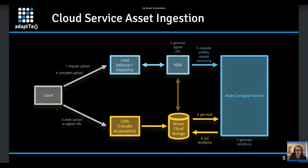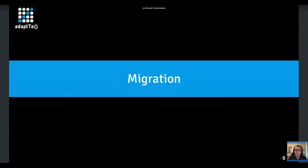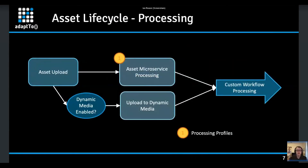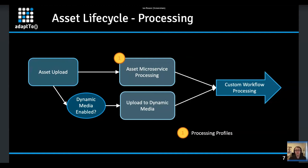In terms of migrating configuration, let's look at the asset lifecycle. An asset gets uploaded, and in the cloud we simultaneously send the asset out for processing in our asset microservice and in Dynamic Media if it's been enabled. That microservice processing uses processing profiles to determine what renditions have been configured — whether watermarking has been enabled, and so on. That's the first configuration point: determining what we need in these processing profiles.